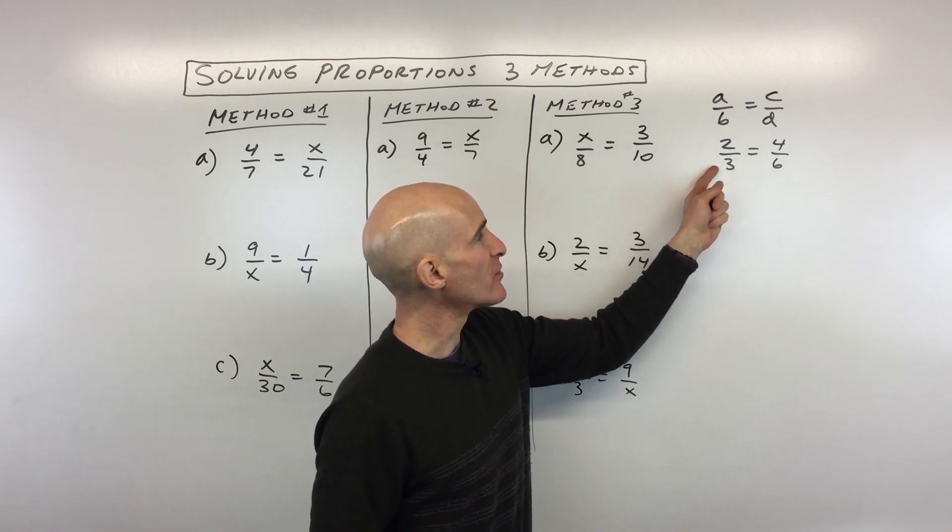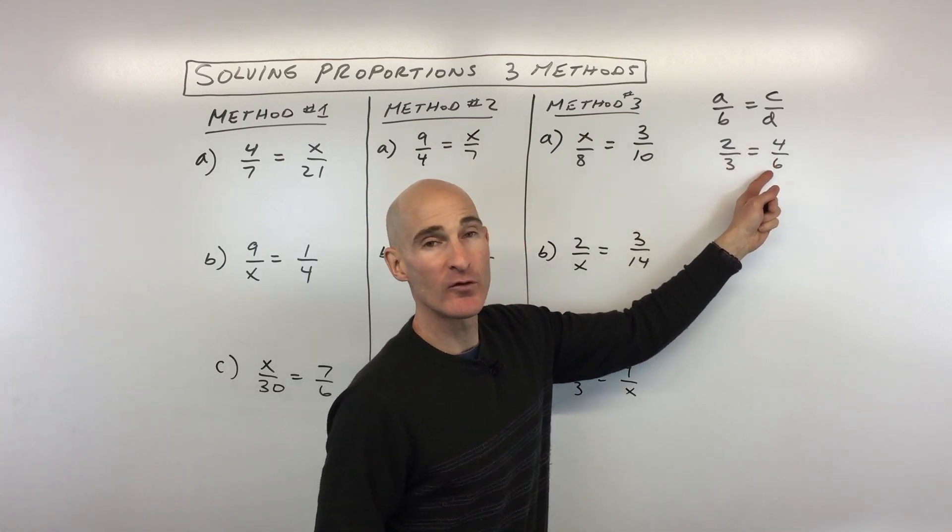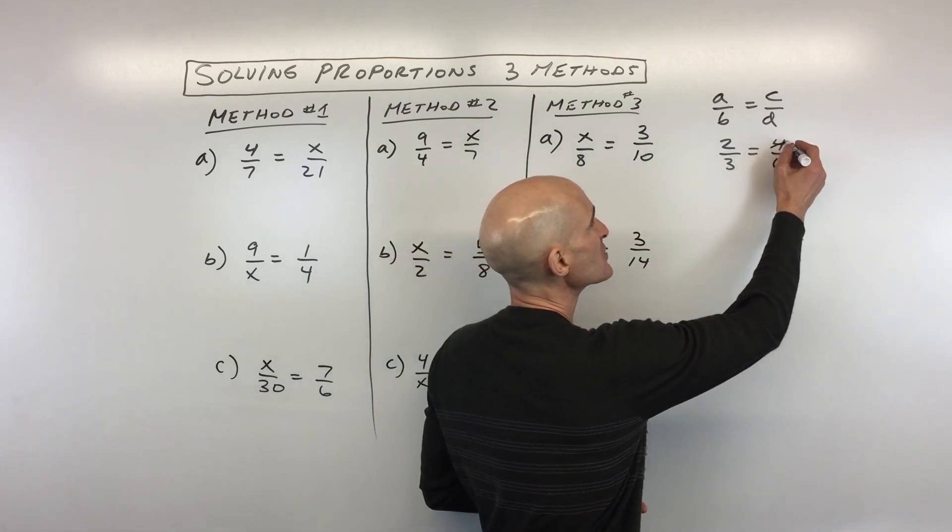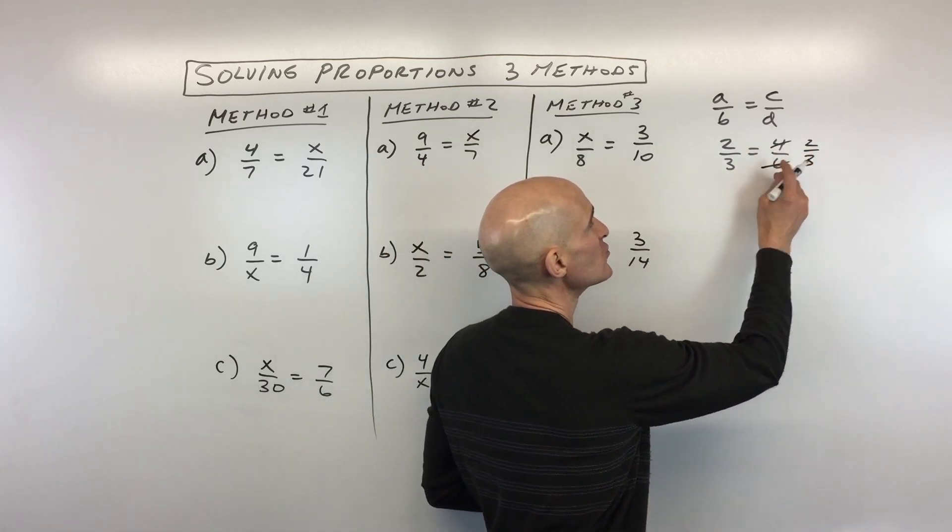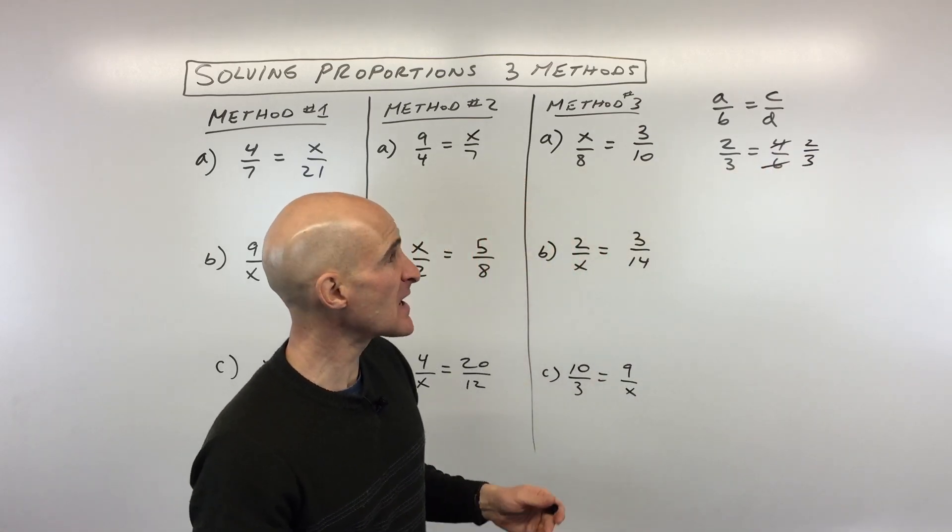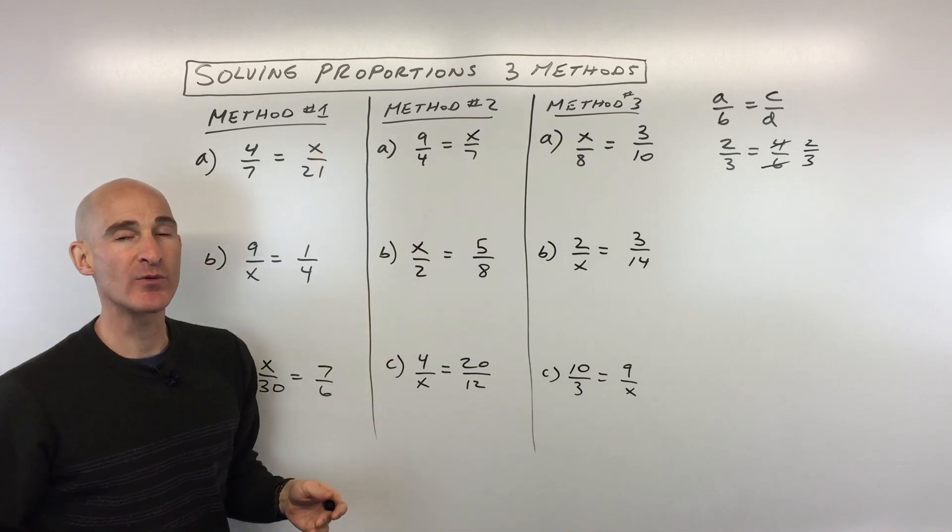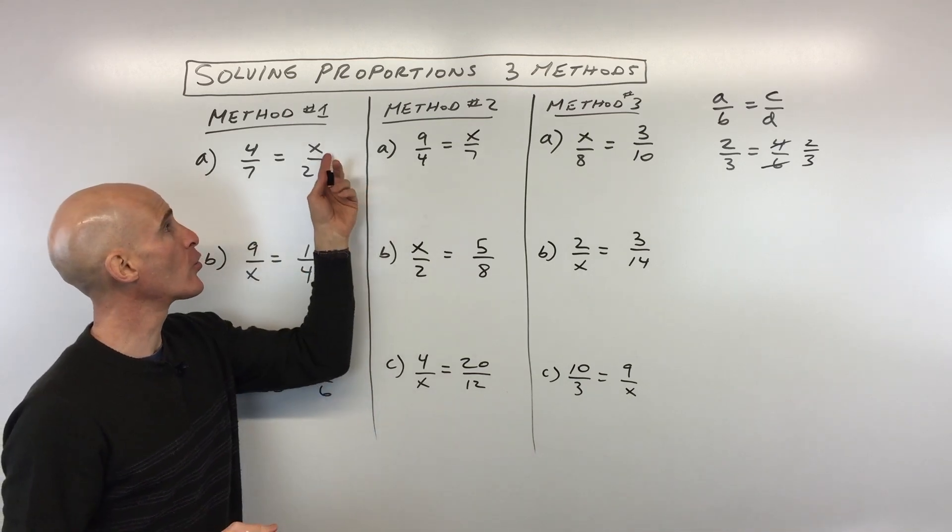So an example would be two thirds equals four sixths. You can see if we reduce four sixths by dividing both sides by two, this reduces to two thirds, and those are equivalent. But sometimes when you're solving a proportion we don't know one of these quantities, right? We want to figure out how do we find out what that unknown quantity is.